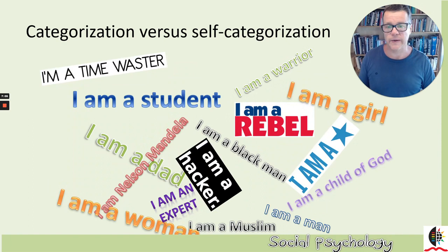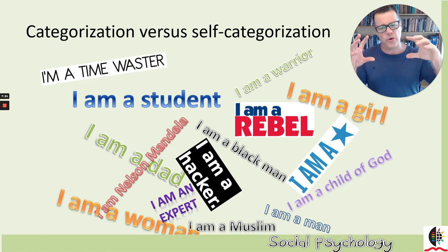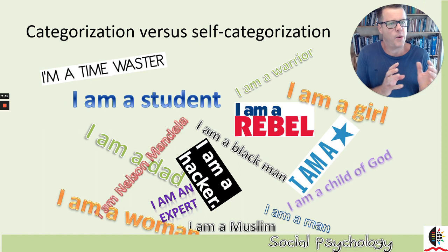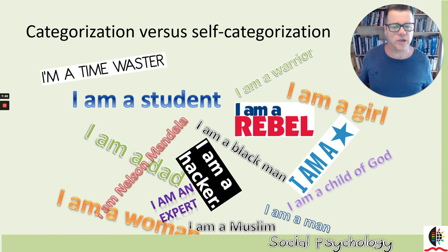If you ask people to define themselves — who are you — they will say things like: I'm a student, I'm a dad, I'm a woman, I'm a man, I'm a Muslim, I'm a rebel, I'm a star. You'll notice that these terms of self-definition are all social categories of one kind or another. Some are more personal or individual idiosyncrasies, but all the others — a girl, a rebel, a Muslim, a woman, a dad, a man — are social categories. So when we think of or define ourselves, we often think in terms of these social categories.